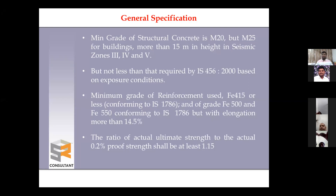Currently FE500 steel is commonly used; FE550 is also being manufactured. Higher grade of steel is required to match higher grade concrete. The code suggests the proof strength ratio of ultimate strength to 0.2% proof strength should not be less than 40%, ensuring the elongation and ductility of reinforcement steel is maintained. FE550 is now introduced with this code.